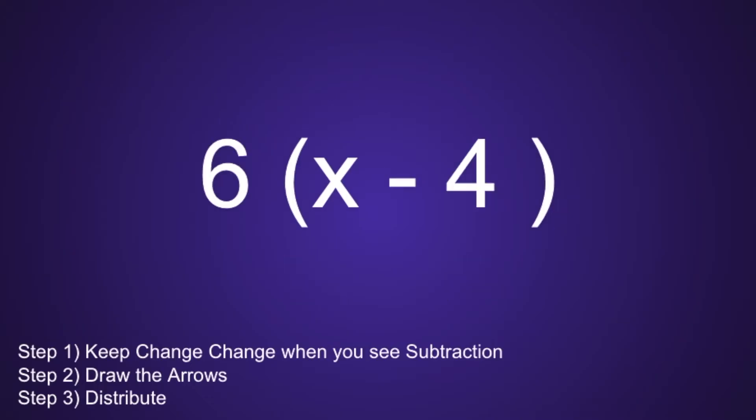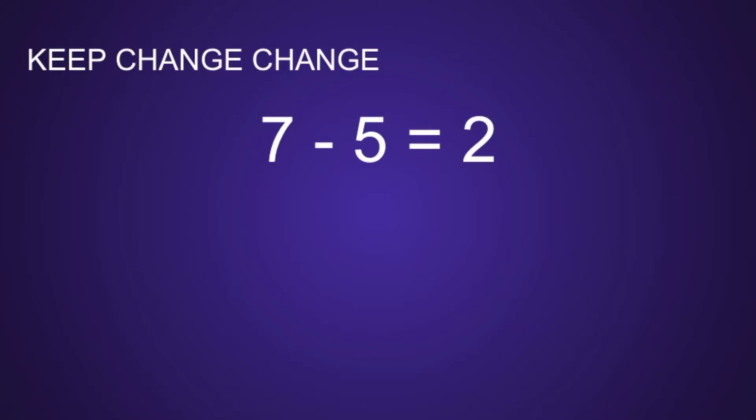Now let's move on to the second example. We have 6 times the quantity x minus 4. Step 1 is to keep change change when you see subtraction. Since we have subtraction in this expression, we are in fact going to keep change change. Before we continue with the problem, I want to briefly review keep change change.